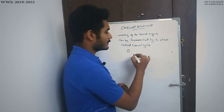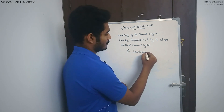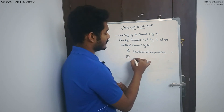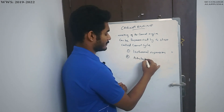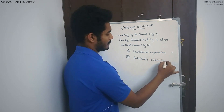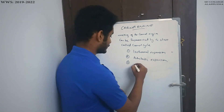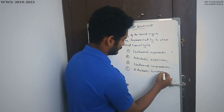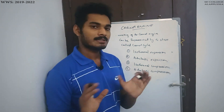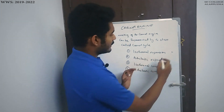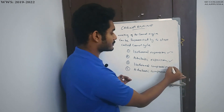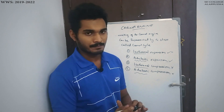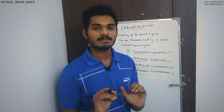The first step is Isothermal Expansion. The second step is Adiabatic Expansion. The third step is Isothermal Compression. The four steps consist of two isothermal processes and two adiabatic processes. Together, these four processes are called the Carnot cycle.